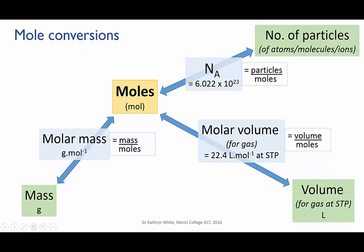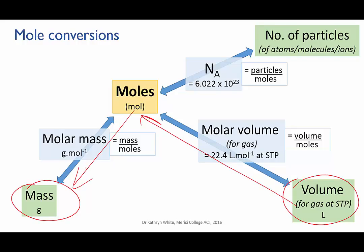For instance, if we need to convert between the mass of something and the number of particles in it, we would first convert from mass to moles and then from moles to particles. If we needed to convert from the volume of a gas at STP to its mass, we would first convert from volume to moles and then from moles to mass.